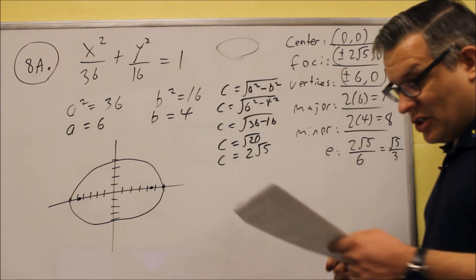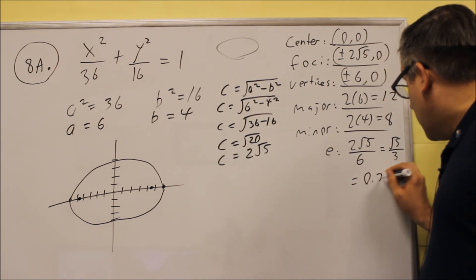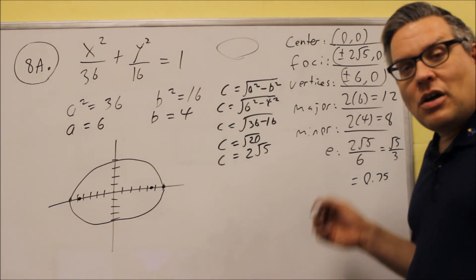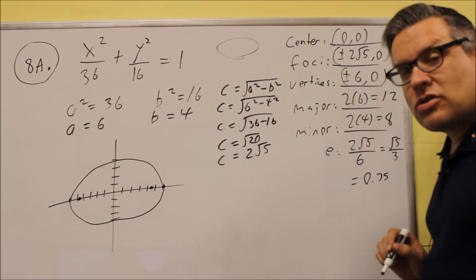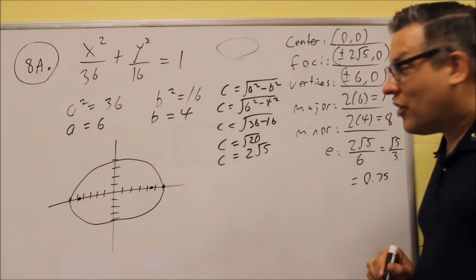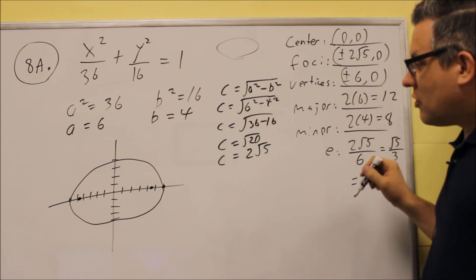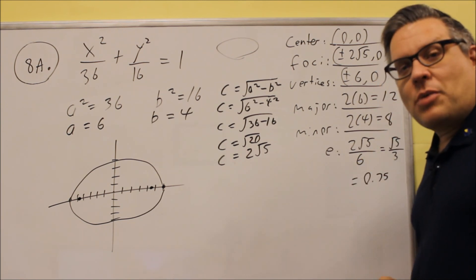A decimal is not necessary on this. If you wanted to write a decimal, it would be about 0.75. But again, you don't need to on this one. It's okay just to leave your answer as square root of 5 over 3. So either way, you want to express that for eccentricity, that's fine. So we have all the information filled out. We have the graph being labeled. And so this problem is complete.